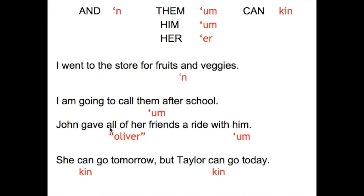The next example combines three words. 'All of her' is going to sound a little bit like the name 'Oliver.' Take a listen: 'John gave all of her friends a ride with them.' Notice 'all of her' sounds like 'Oliver' — we're cutting out the 'h' in 'her.' And 'with them' reduces as well. Try to repeat it after me: 'John gave all of her friends a ride with them.' And the final one — 'can' with the weak form: 'She can go tomorrow, but Taylor can go today.' Notice 'can' sounds like 'kin.' Try to repeat it after me: 'She can go tomorrow, but Taylor can go today.'